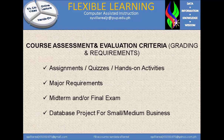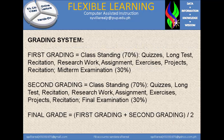Now in course assessment and evaluation criteria — grading and requirements. Students need to pass assignments, quizzes, and hands-on activities. Major requirements include midterm and/or final exam, and a database project for small or medium businesses. Grading system: first grading — class standing is 70%, covering quizzes, long tests, recitation, research work, assignments, exercises, and projects, plus the midterm examination.